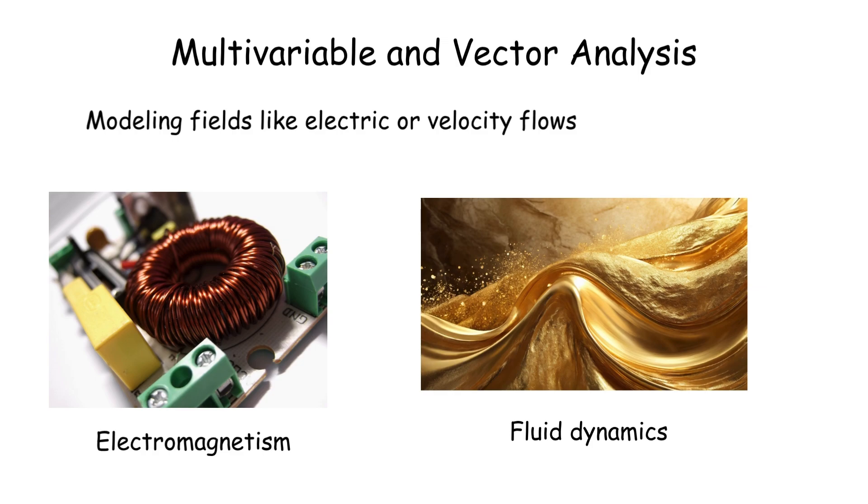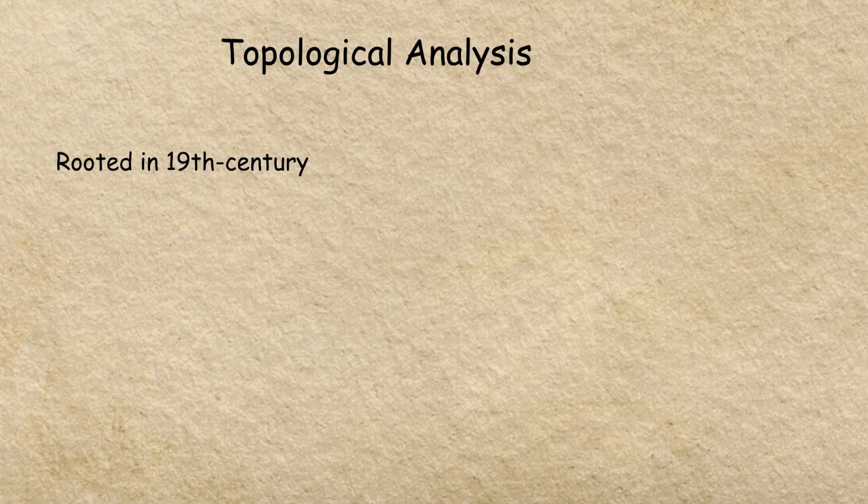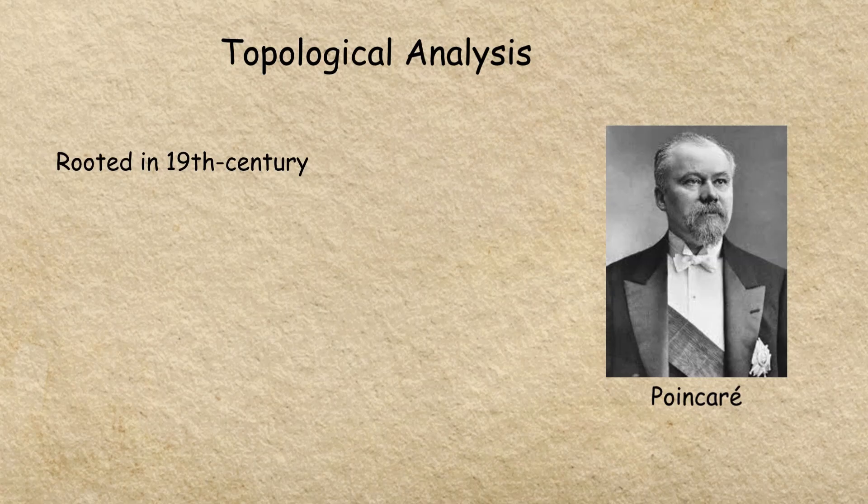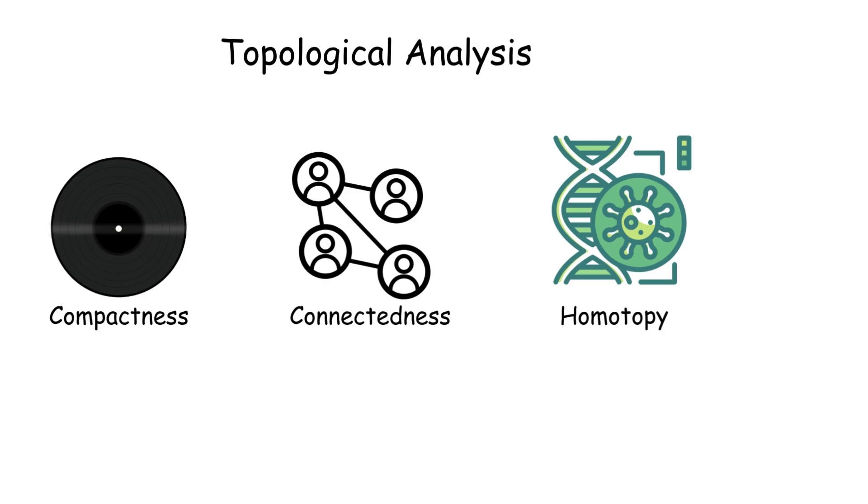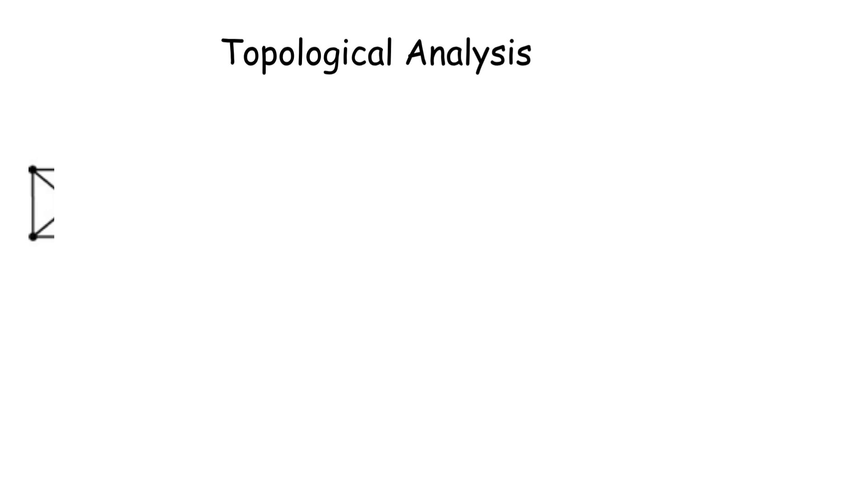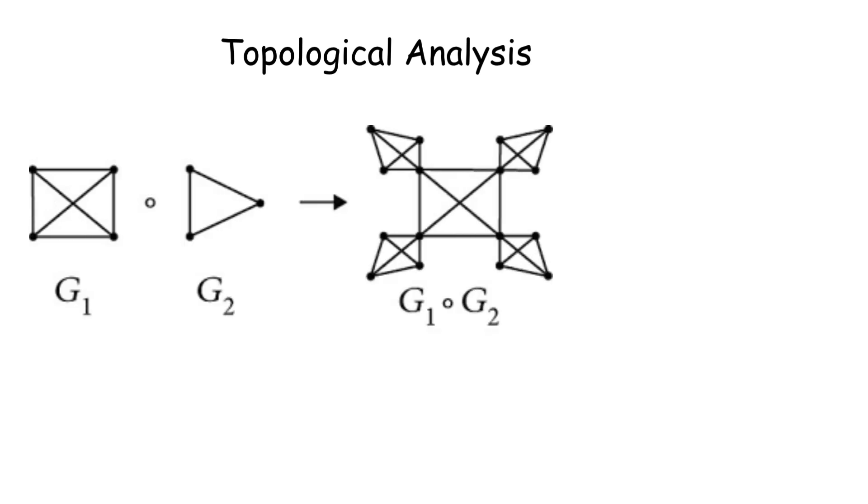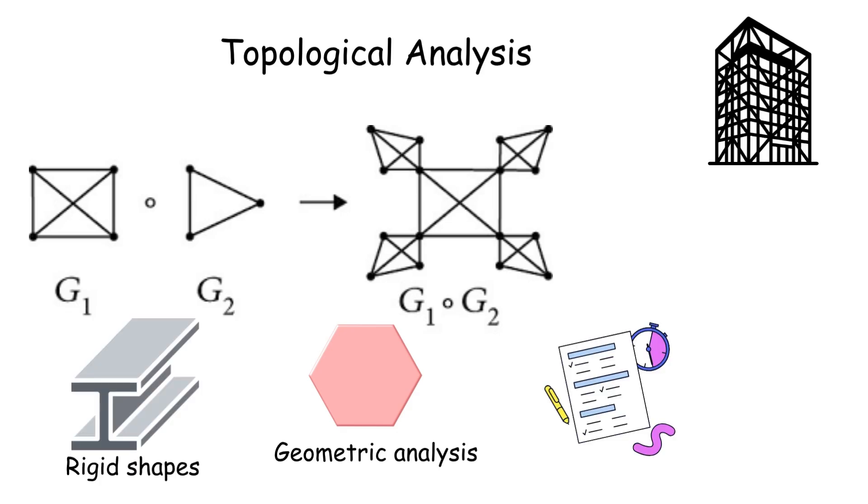Topological analysis studies properties preserved under continuous deformations, like stretching or bending, in topological spaces. Rooted in 19th century work by Poincaré, it includes concepts like compactness, connectedness, and homotopy. It's used in dynamical systems and algebraic topology. For example, topological degree theory finds fixed points in complex systems. Unlike geometric analysis, it ignores rigid shapes, focusing on abstract structure, making it a flexible tool for qualitative problems.